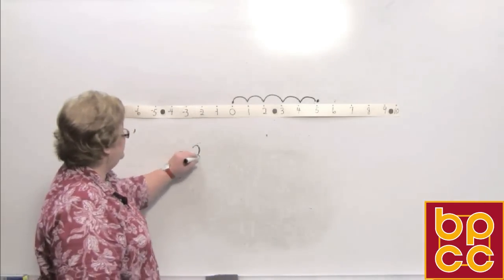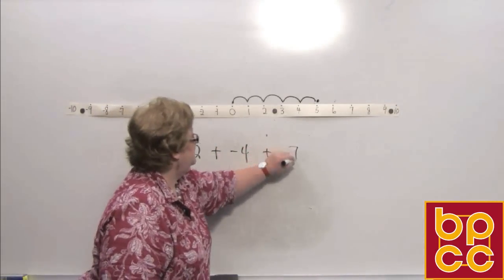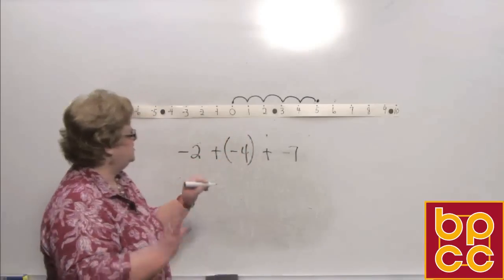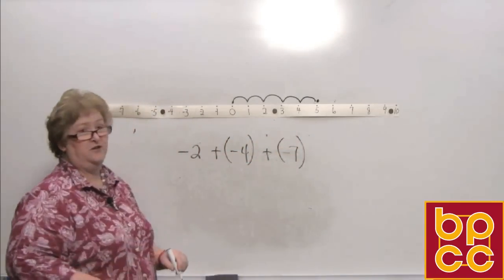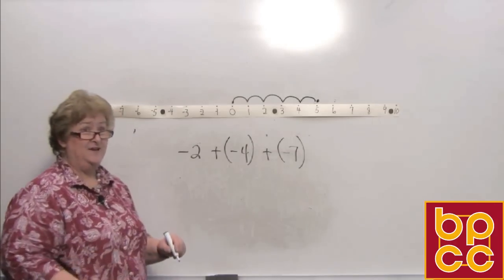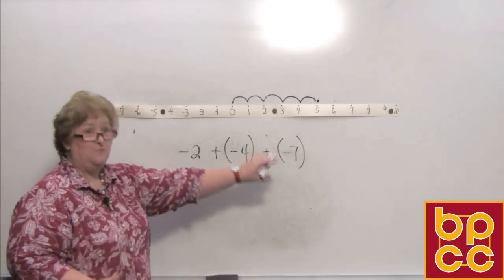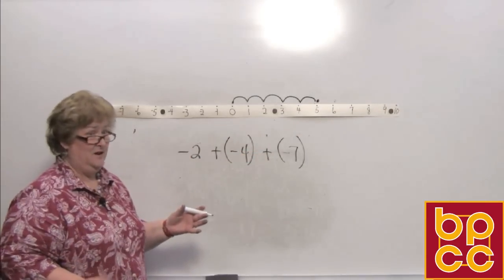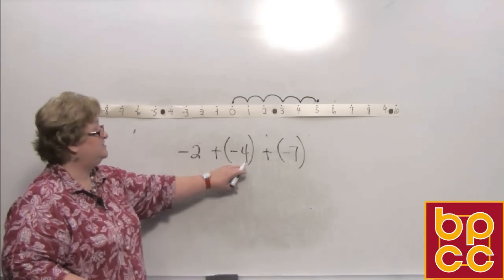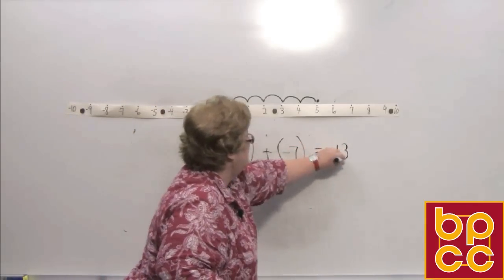Let's say we have negative 2 plus negative 4 plus negative 7. I'll put parentheses to make it nice and clean so you can see the plus signs. Simply add all the negatives: negative and more negative and more negative make a big negative. 2 and 4 is 6 — that's negative 6 — and negative 6 plus negative 7 gives negative 13.